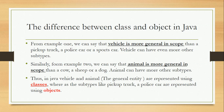The same in Java — vehicle and animal, the general type, the general entity, are represented using classes. Whereas the subtypes, like a pickup truck, a police car, a car, a sheep, or a dog, are represented using objects.